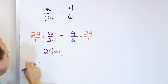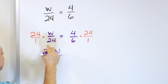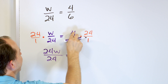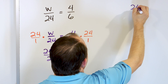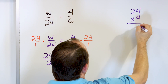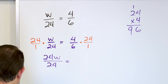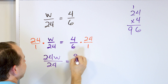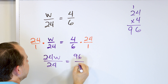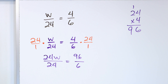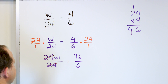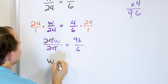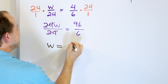How do we get rid of the 24? It's divided by 24, so we'll multiply by 24 — and then multiply by 24 on the other side too. We can write it as 24 over one. Now the 24 times W will be 24W; we can't really multiply it, so you just write it next to each other. One times 24 is 24. And four times 24 on the right — 24 times four: four times four is 16, two times four is eight, giving us 96. And six times one is six.